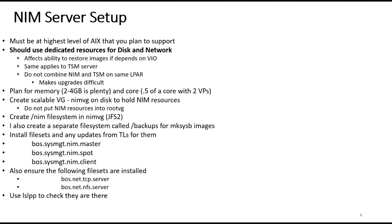Let's start by talking about NIM server setup. Your NIM server has to be set up at the highest level of AIX that you plan to support, including your VIO servers. If you run 'oslevel -s' on your VIO server, it will tell you what level of AIX it is. Right now the highest level of AIX is 7.2 TL4 SP2 with the suffix 2028. My NIM server is running at that level. It can support multiple operating systems below that, but to support the latest VIO server 3.1.1.2.5 and the latest AIX, my NIM server must be at that level. When new levels of the OS come out, the first system I upgrade is my NIM server.